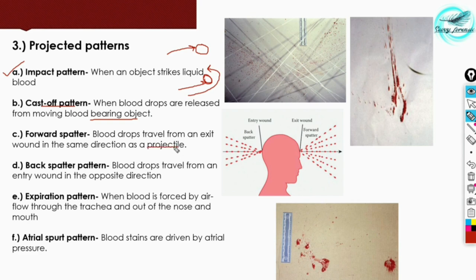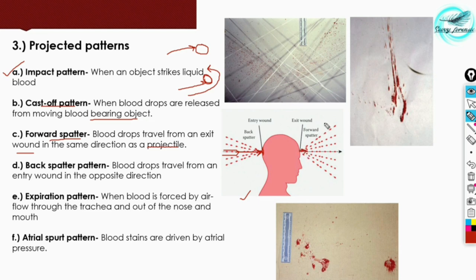The third is forward spatter — blood drops travel from an exit wound in the same direction as the projectile. This spatter stain forms due to a gunshot injury. As shown in this diagram, a bullet comes from one direction, hits the subject forming an entrance wound and an exit wound. From the exit wound, as the projectile releases, stains are formed in the forward direction — these are termed forward spatter stains.